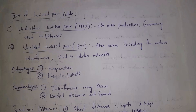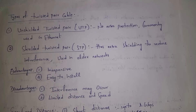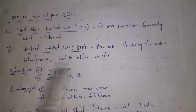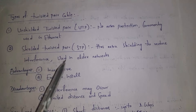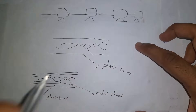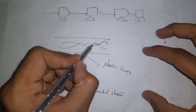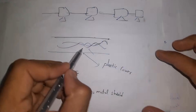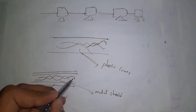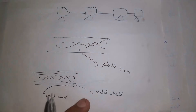In shielded twisted pair we cover the two wires using a metal sheet. STP has extra shielding to reduce interference and it is used in older networks. In the UTP structure, two wires are covered with a plastic cover, whereas in STP, two wires are covered with a metal shield which is then covered with a plastic cover — providing extra protection.